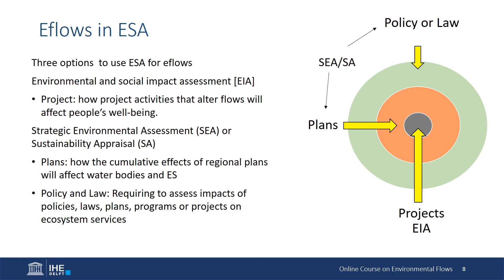Significant impact assessment can be applied at different levels to determine effects on flows and the related ecosystem services. At project level, environmental and social impact assessment should be used to determine how the activities during the construction, operation, and closure of a project could alter flows, affect ecosystem services, and people's well-being.